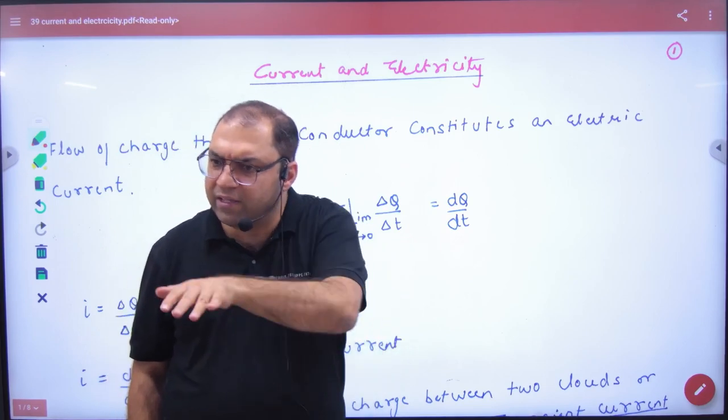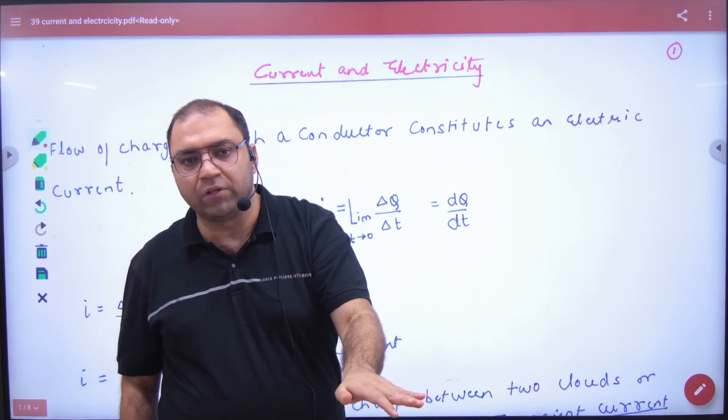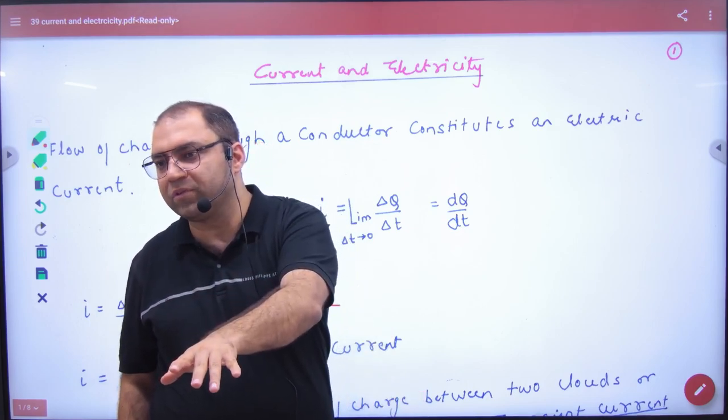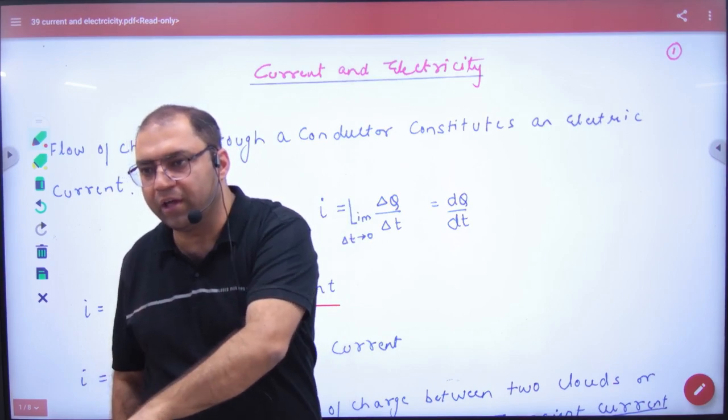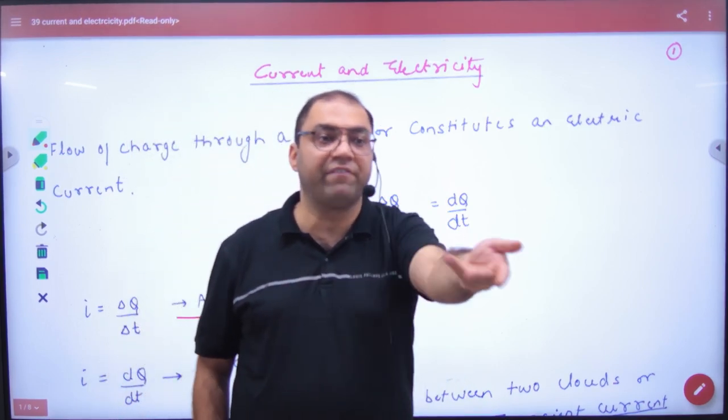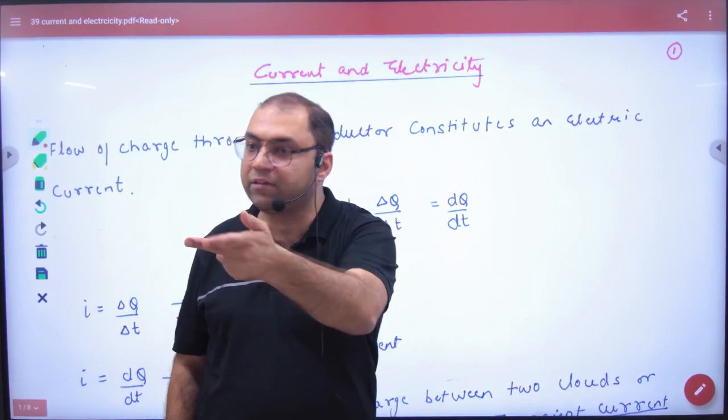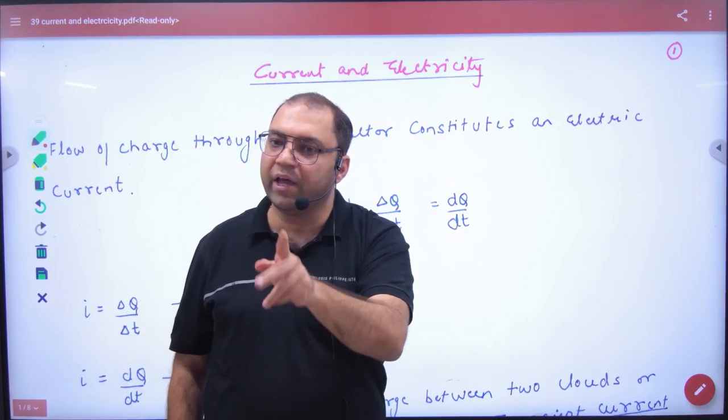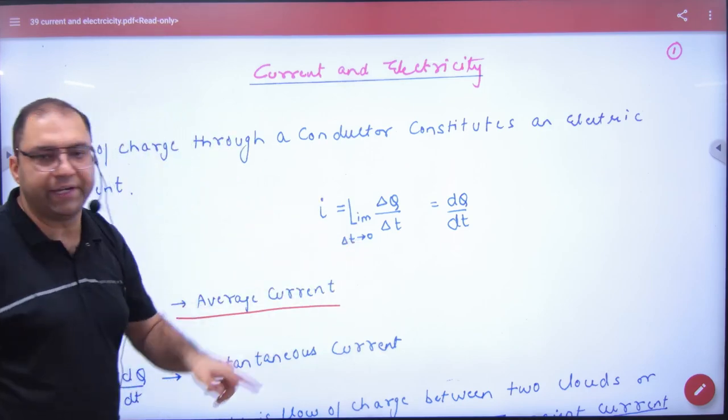What if charge varies with time? The current is lower. The speed of car is lower, the instantaneous velocity is lower. The charge is lower, the instantaneous current is lower. The average speed is delta x by delta t and the instantaneous speed is dx by dt. In that way, the average current is delta q by delta t and the instantaneous current is dq by dt.